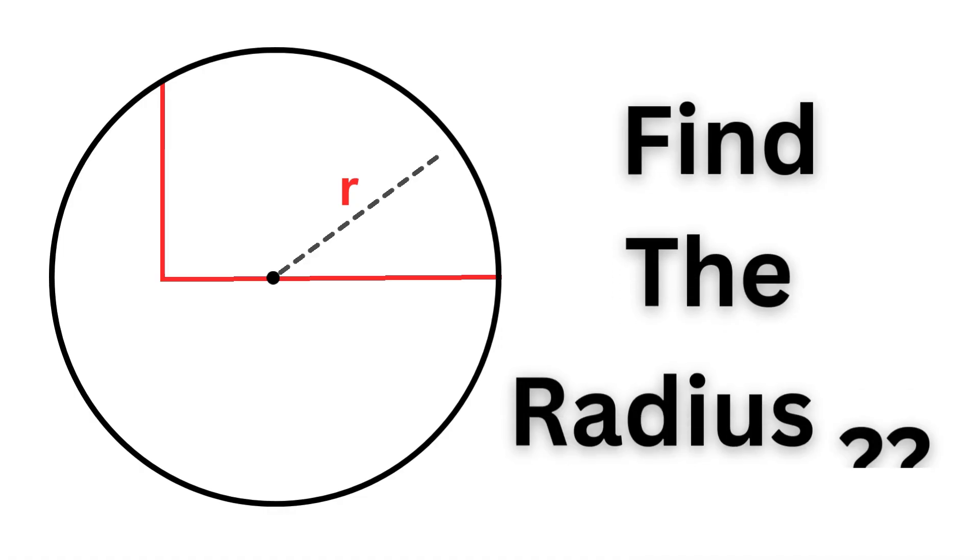We have a circle, and inside the circle we draw two line segments such that they are perpendicular to each other. Also notice that one of the line segments passes through the center of the circle. Our task is to find the radius of this circle.